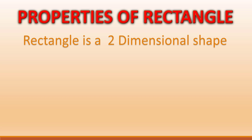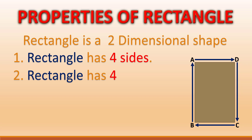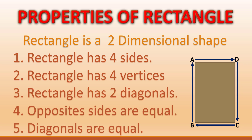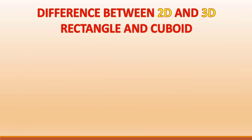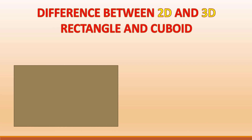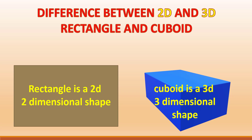Properties of a rectangle: a rectangle is a two-dimensional shape. It has four sides: AB, BC, CD, and AD. It has four vertices: A, B, C, and D. It has two diagonals: BD and AC. Opposite sides are equal and the diagonals are also equal. The difference between 2D and 3D: rectangle is the 2D shape and cuboid is the 3D shape. In 3D we can see three dimensions, whereas in the rectangle we can only see two dimensions.